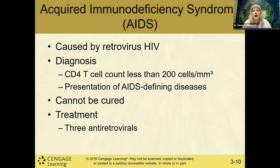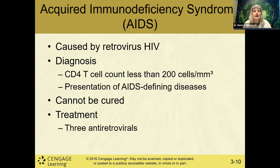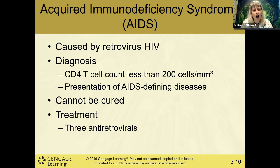HIV is a retrovirus with an enzyme that takes its DNA and inserts it into the DNA of the human being. Every time the cell replicates, the virus replicates throughout the body. The CD4 count — the T-helper cell — if it falls under 200, we have full-blown AIDS. We don't cure HIV, but a person can now live a long life with a cocktail of antiviral agents that maintain health and prevent progression to full-blown AIDS.